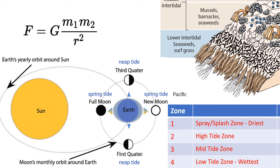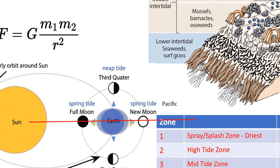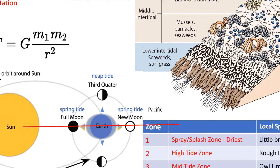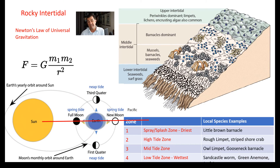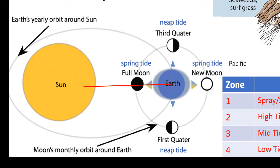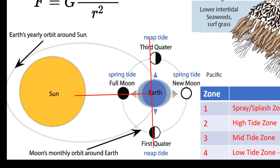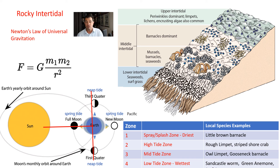The earth is also spinning — it takes 24 hours for the earth to spin on its own axis — and the earth also goes around the sun, which takes one year. When the moon, the sun, and the earth are all in a straight line, that gives you the biggest tides, called spring tides. When they're at a right angle to each other, those are called neap tides. Most places, including where we live, have two low tides and two high tides per day.